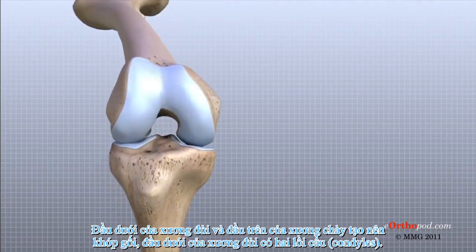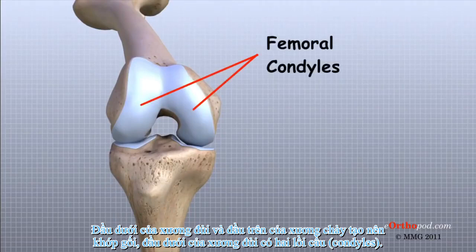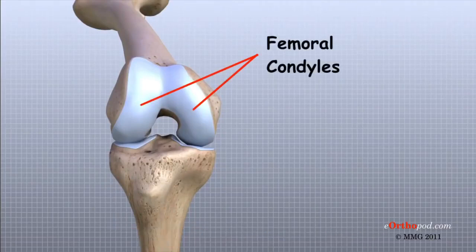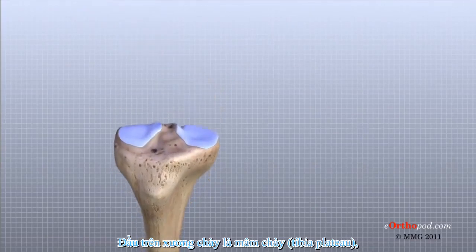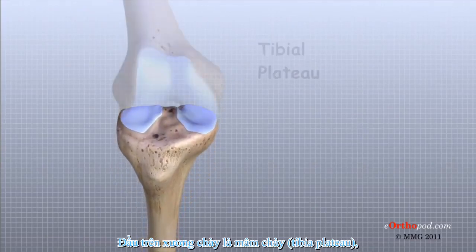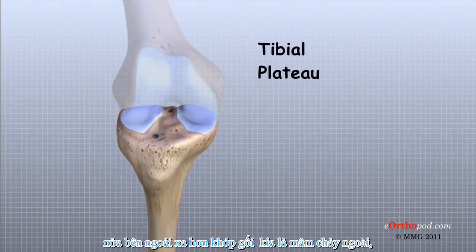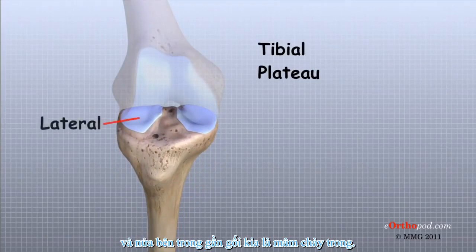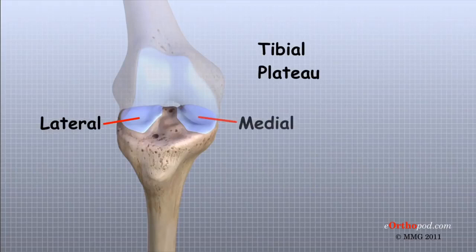The end of the femur joins the top of the tibia to create the knee joint. Two round knobs called femoral condyles are found on the end of the femur. These condyles rest on the top surface of the tibia, called the tibial plateau. The outside half, farthest away from the other knee, is called the lateral tibial plateau, and the inside half, closest to the other knee, is called the medial tibial plateau.